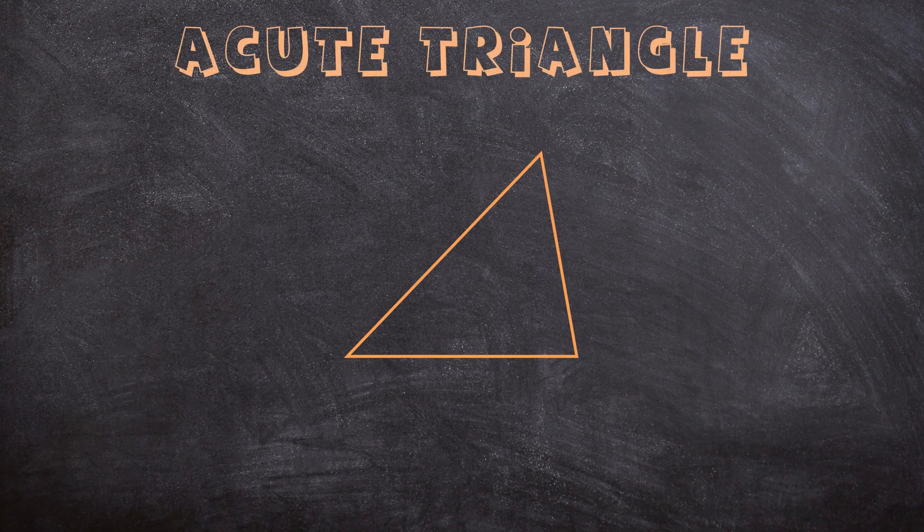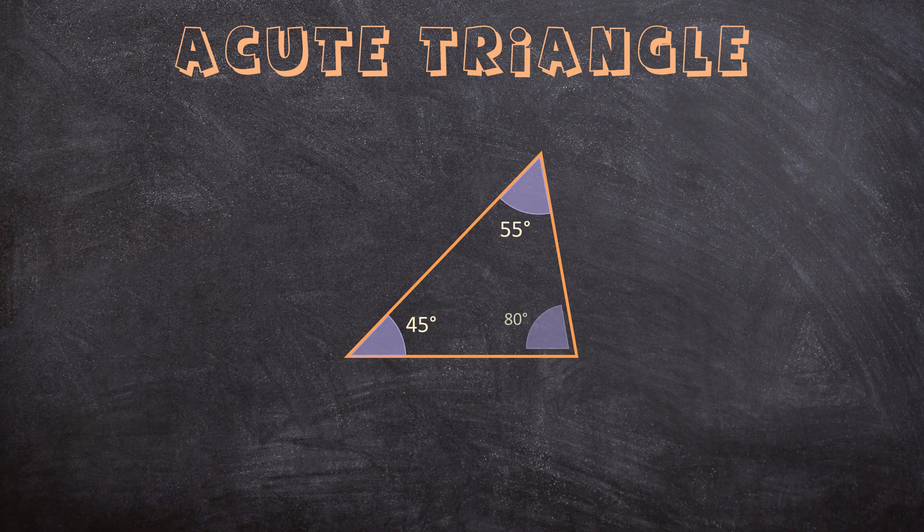For the first triangle, we have an acute triangle. What that means is that all the angles in this triangle are smaller than 90 degrees.